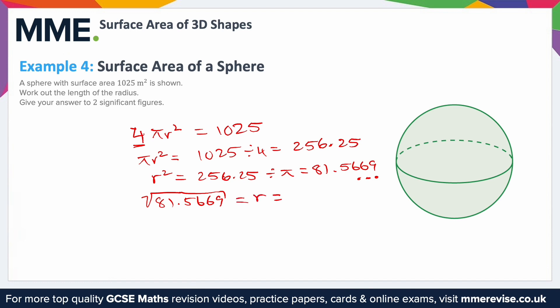Taking the square root of 81.5669 gives r ≈ 9.0314. We want two significant figures: the first significant figure is 9, the second is 0, and since the next digit is 3 it rounds down. So the answer is 9.0. The units: the surface area was in metres squared, but this is a length — the radius — so it's just metres. The final answer is 9.0 metres to two significant figures.